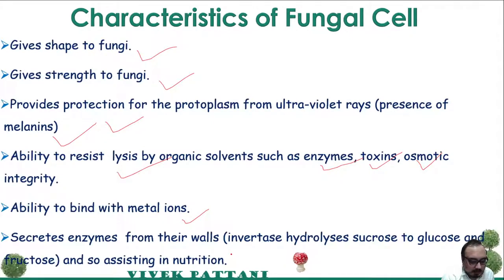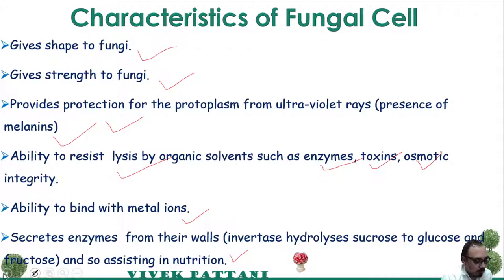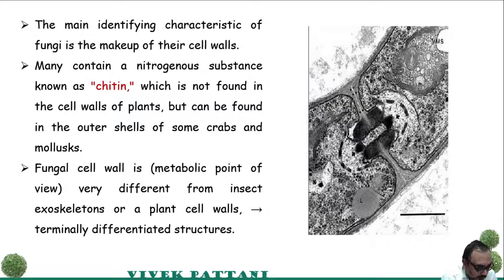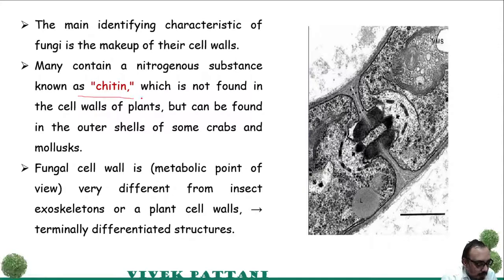Such enzymes include invertase, which converts sucrose to glucose and fructose. These enzymes produced by the fungi basically assist in the digestion or uptake of food. One of the most important identification features of the fungi is the makeup of the cell wall, which contains a nitrogenous substance called chitin. This chitin differentiates the cell wall of fungi from that of plants.